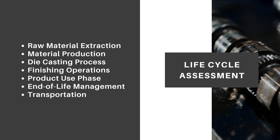The die casting process stage assesses environmental impacts involving energy consumption during metal melting, the use of lubricants, release of emissions or pollutants and waste generated during casting. Finishing operations consider any post-processing involved in finishing the die cast part, including surface treatment, machining, painting or coating.